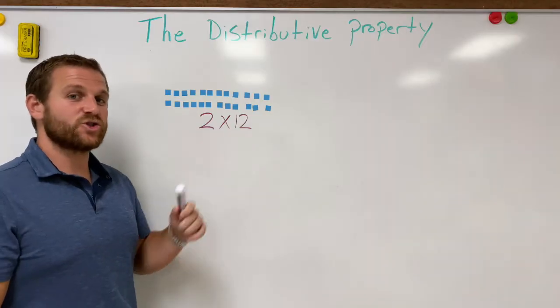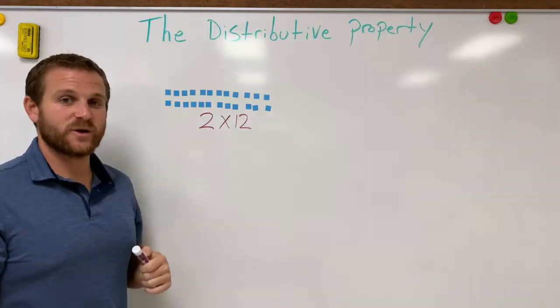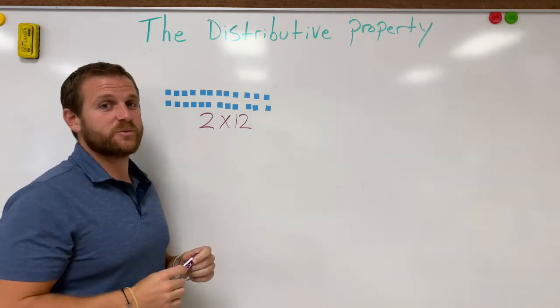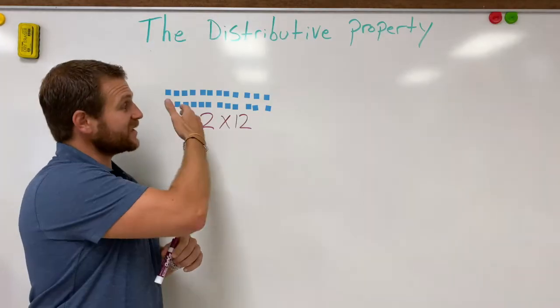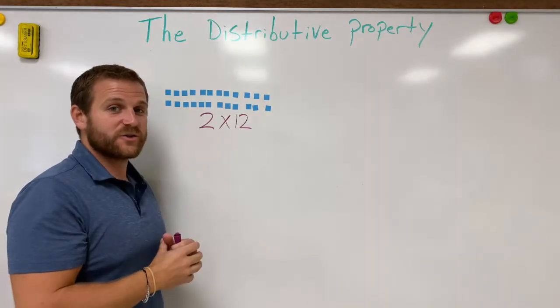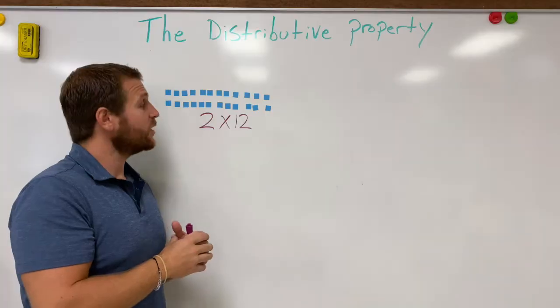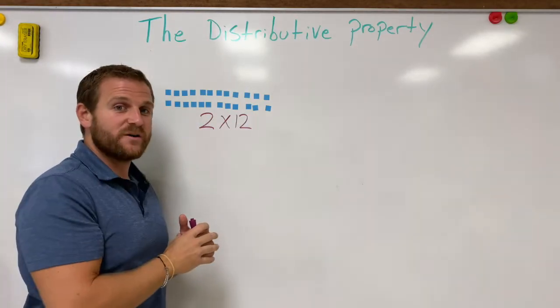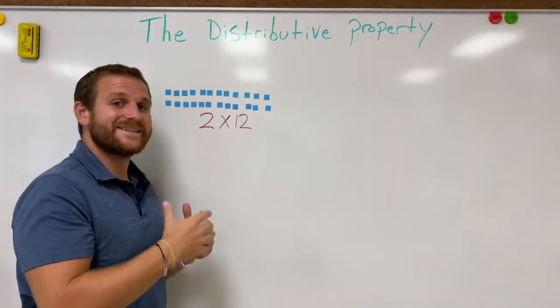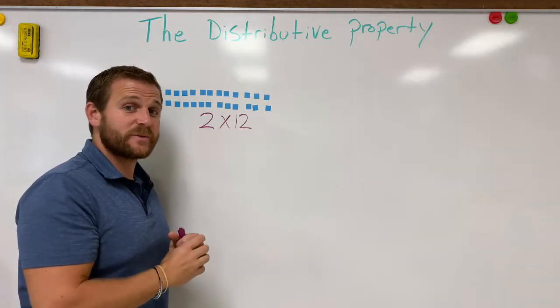What I have right here is two groups of 12 or two times 12. Now for those of us that don't know our double digit multiplication problems yet, the distributive property is really going to come in handy because these two groups of 12 are more difficult to multiply than single digits. What I'm going to do is I'm going to take this 12, take each row of 12 and break that number down into something that's more manageable for me and something that's easier to multiply.